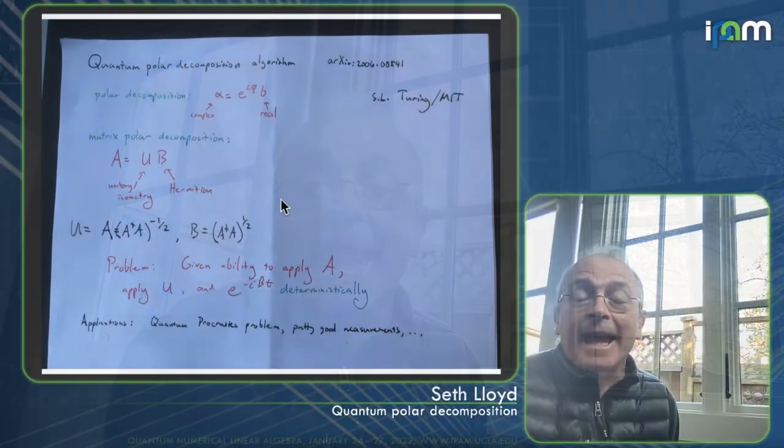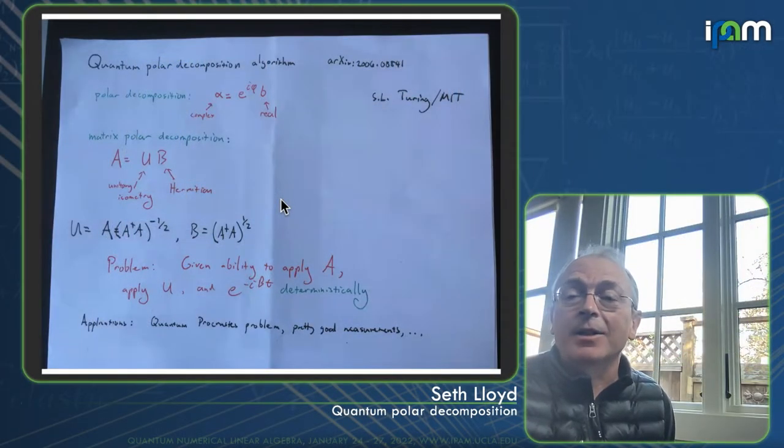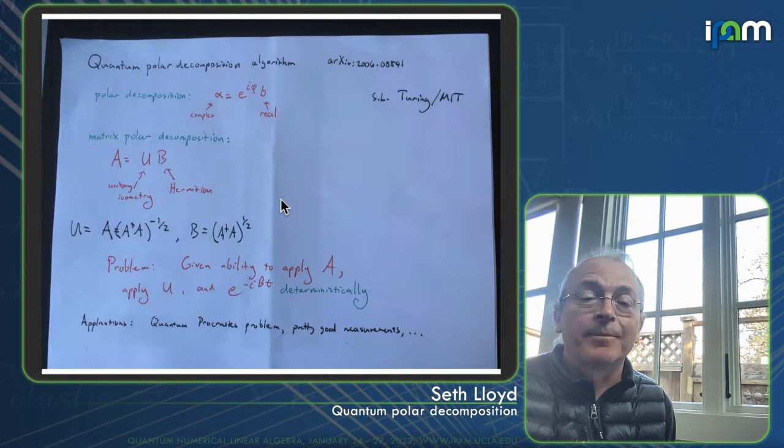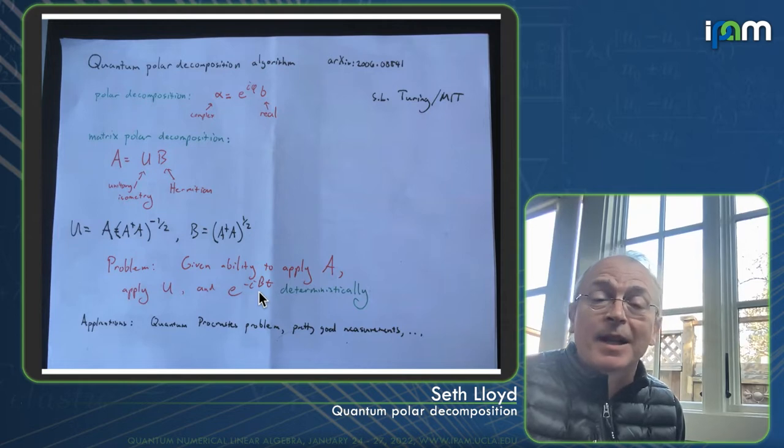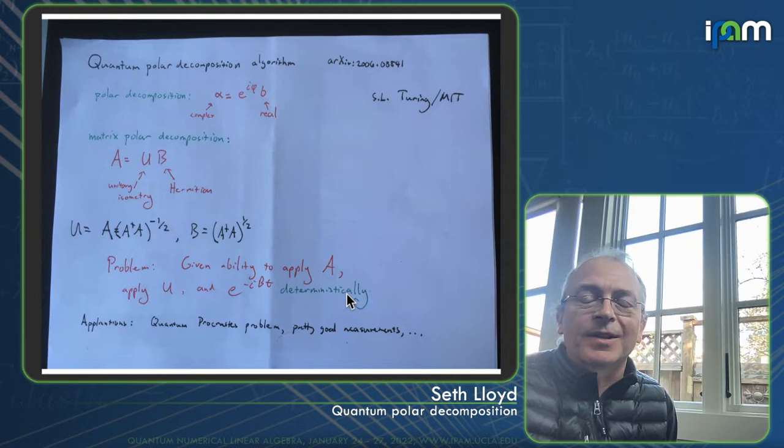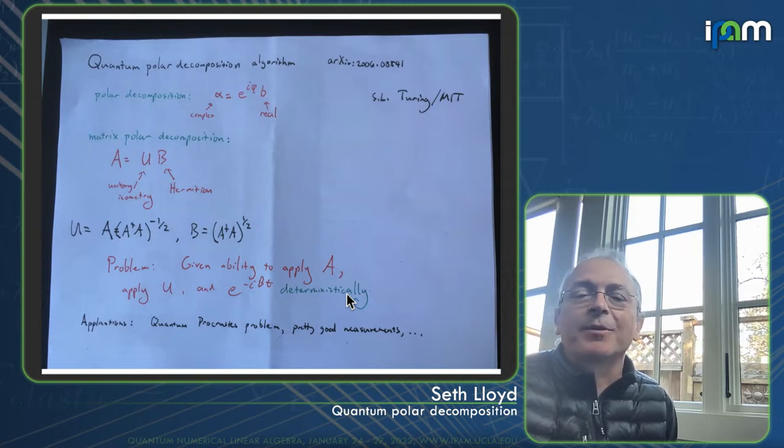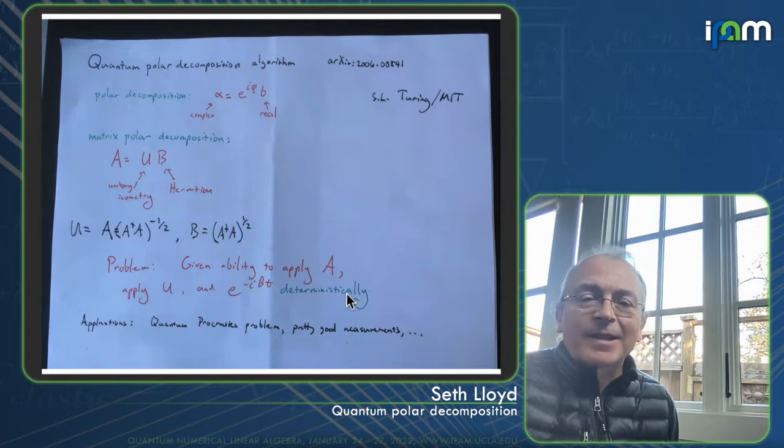So our problem that we're going to answer here is given the ability to apply A, either as a block in a unitary or as part of a Hamiltonian, our goal is to apply the U, the polar decomposition unitary or isometry, and apply the Hermitian matrix B as a Hamiltonian, so e to the minus i Bt, and we want to do this deterministically. There are many possible applications here. That's our goal. Now I've described the quantum polar decomposition problem, and I'll describe to you the algorithm.